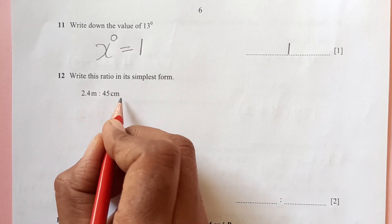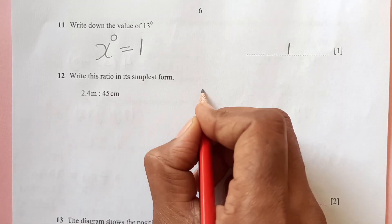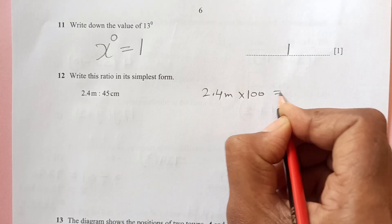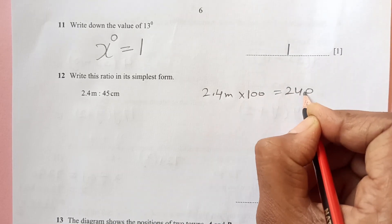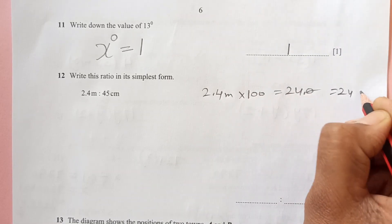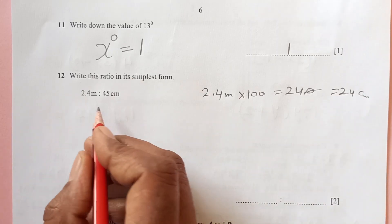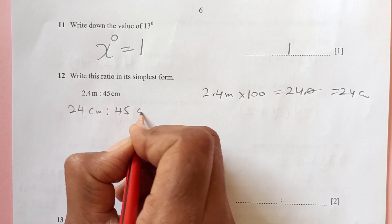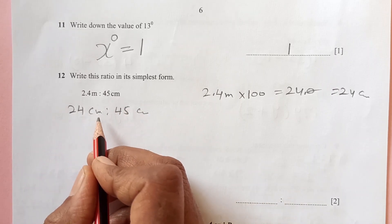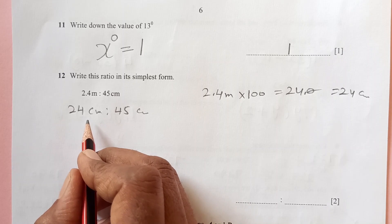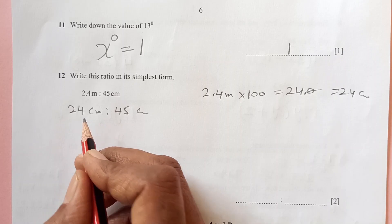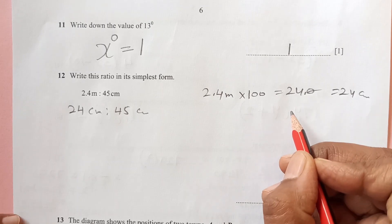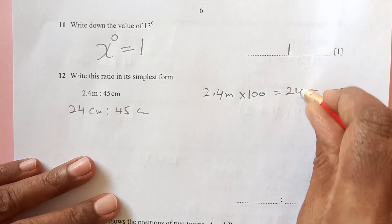Write this ratio in simplest form. You have here meters and here centimeters, so we need to convert that. 2.4 meters times 100, one decimal place, so that is 240 centimeters. So we can write it down as 240 centimeters by 45 centimeters.